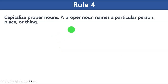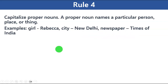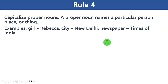Rule number four: capitalize proper nouns. A proper noun names a particular person, place, or thing. For example, 'a girl' is common, but the particular girl is 'Rebecca.' 'A city' is common, but the particular city is 'New Delhi.' 'Newspaper' is common, but a particular newspaper is 'Times of India.' When referring to a proper noun, the first letter must be capitalized — Rebecca, New Delhi, Times of India.